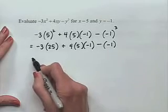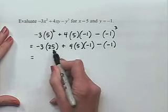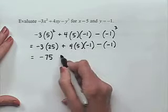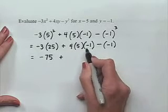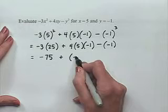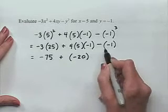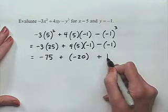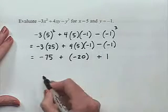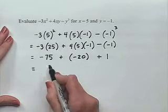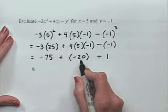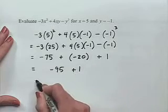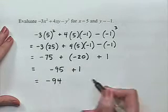Now let's do the multiplication. Negative 3 times 25 will be negative 75. In the middle term, 4 times 5 times negative 1 gives us negative 20. We have the subtraction of negative 1, which we rewrite as the addition of 1. So negative 75 plus negative 20 is negative 95, plus 1 gives us negative 94 as the result.